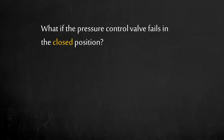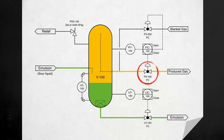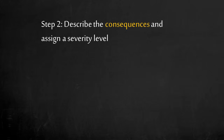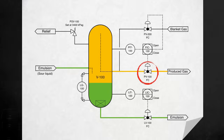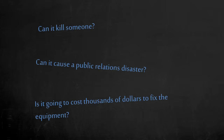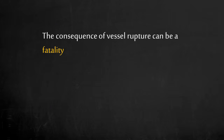What if the pressure control valve fails in the closed position? What if vessel V100 were to overpressure leading to rupture due to inadvertent closure of the pressure control valve? Can it kill someone? Can it cause a public relations disaster? Is it going to cost thousands of dollars to fix the equipment? These may be some of the consequences that matter to you and your company, and the risk should be managed. Based on some discussion, the team has agreed a vessel rupture can lead to a fatality. Now one of the two elements of risk is established. What is the other element?